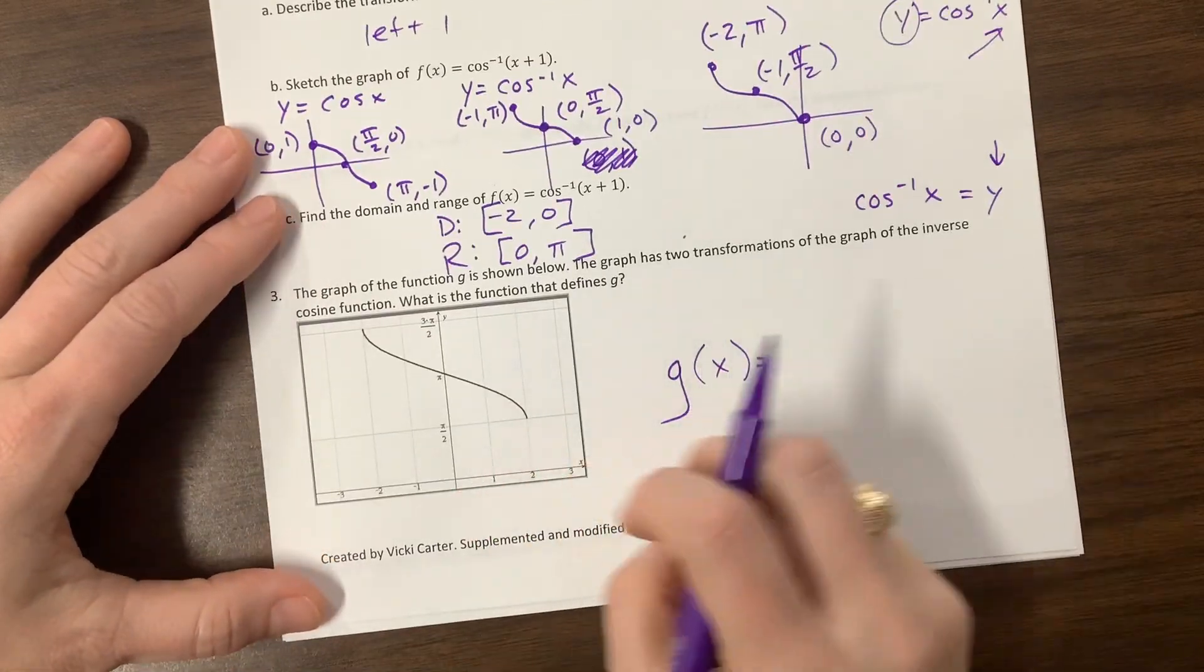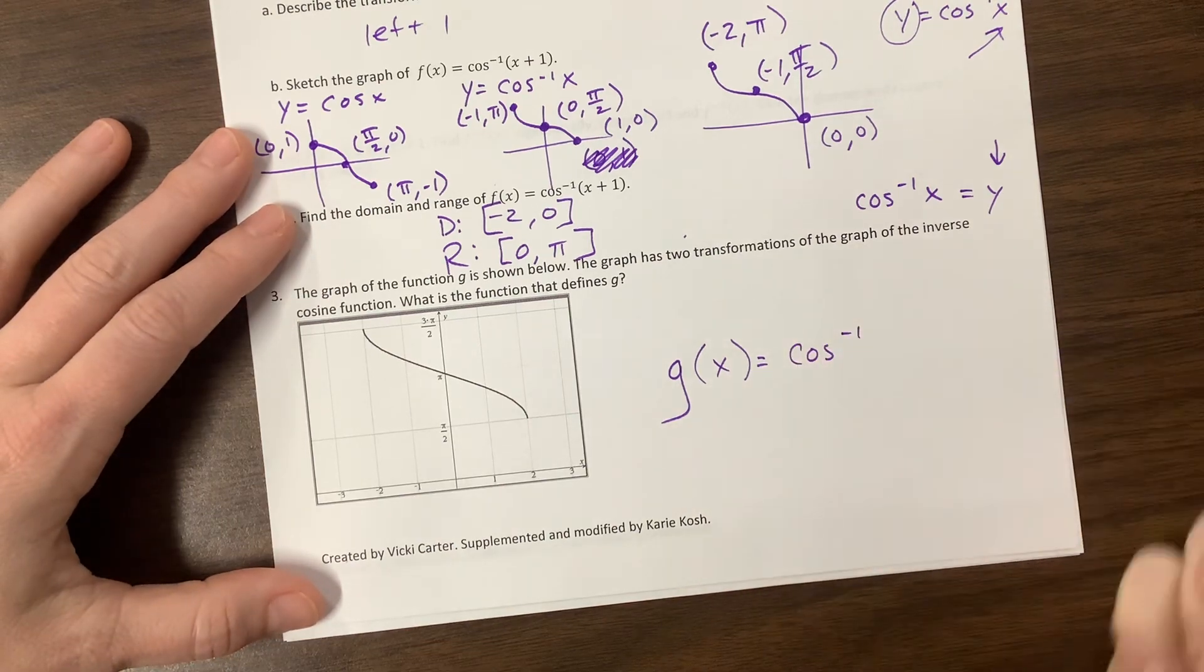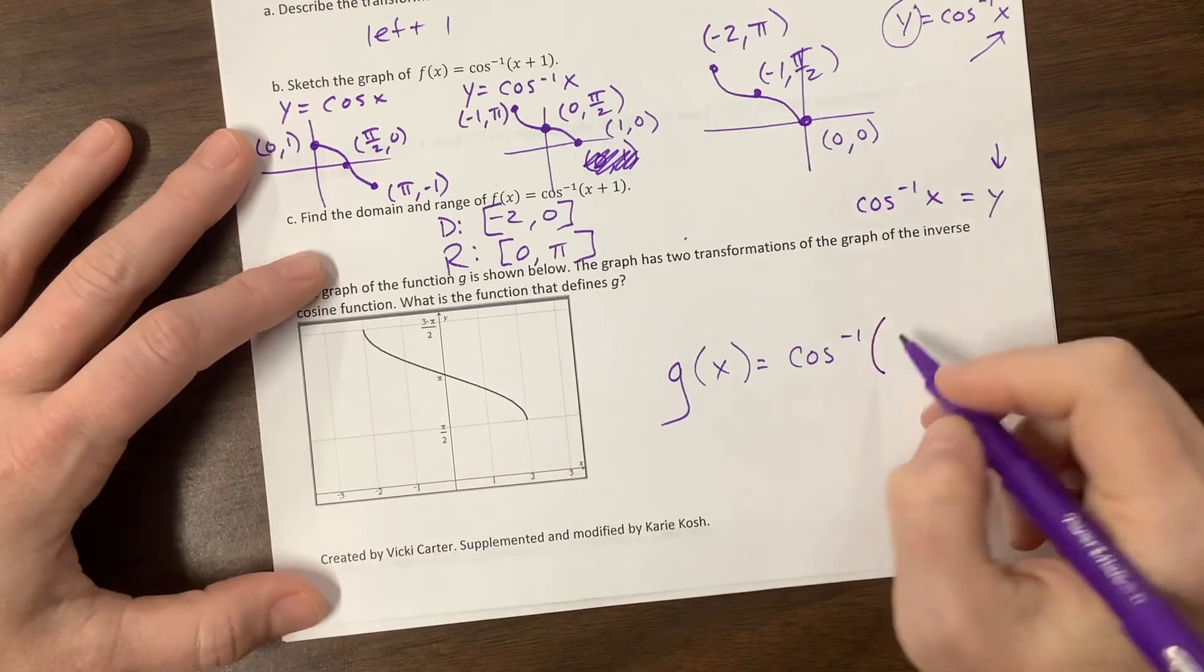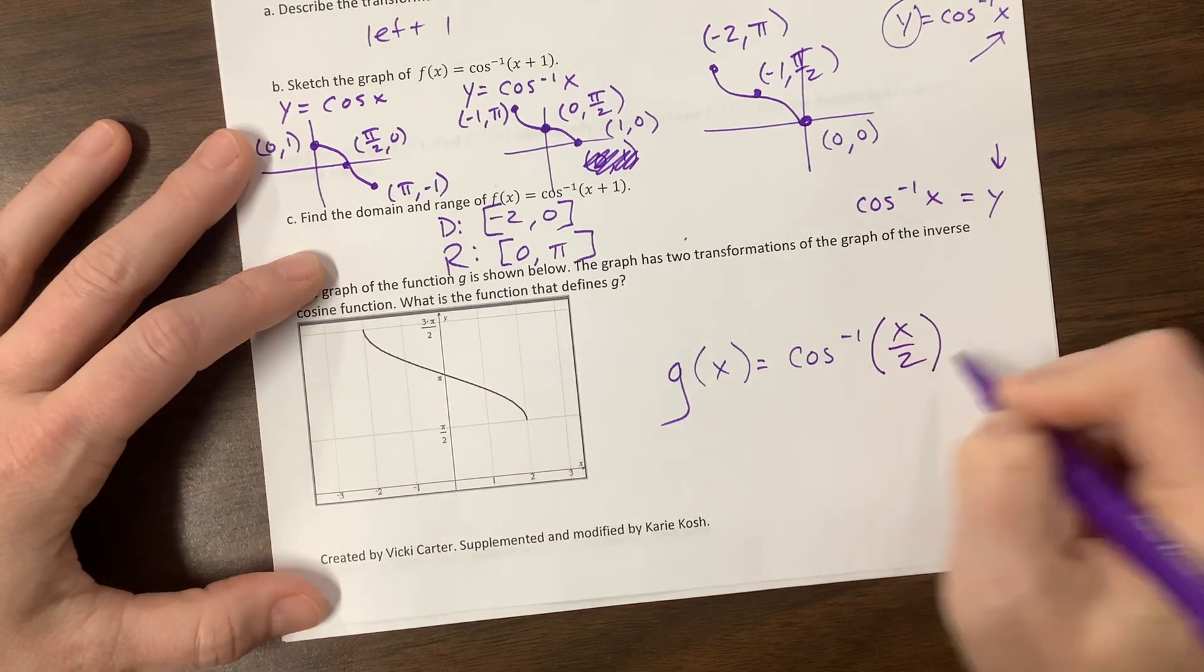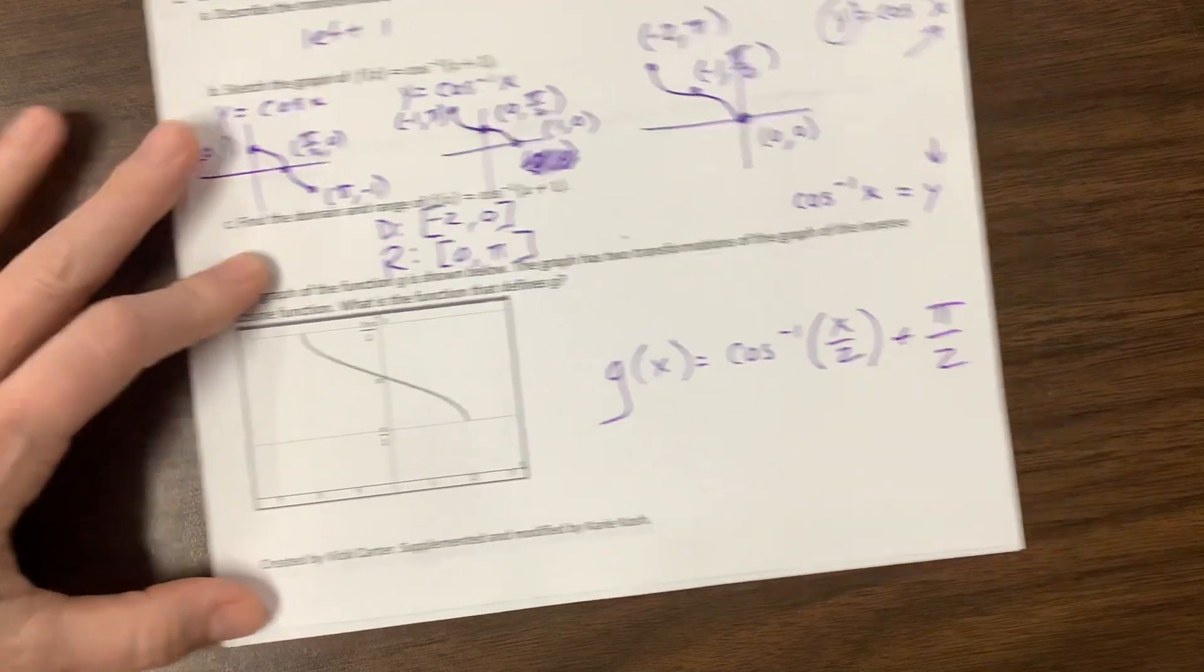g of x is going to be, we didn't have any sort of vertical stretch. So we just have inverse cosine. But we did stretch it horizontally. So this is going to be x over 2. And then we shifted it up, pi over 2.